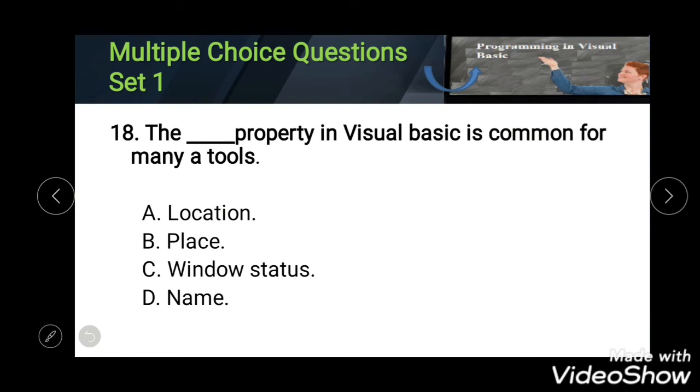Eighteenth: the blank property in VB is common for many a tool. Options: Location, Place, Window Status, and Name. The correct answer is Name.